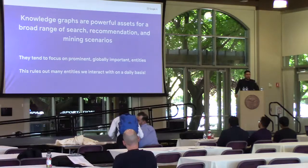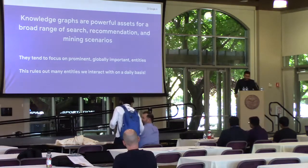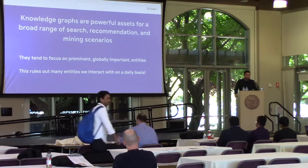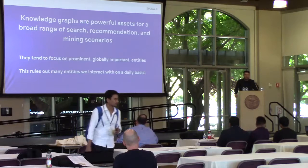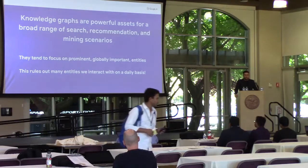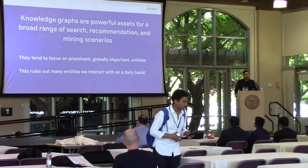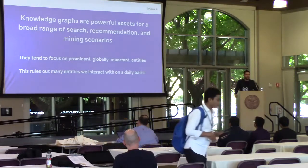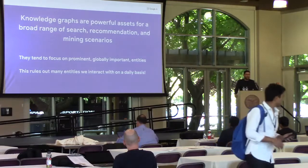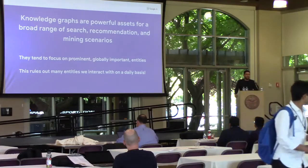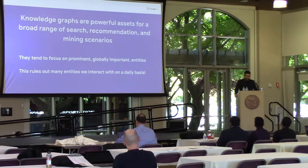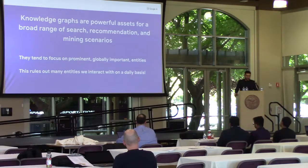Knowledge graphs have been used in a broad range of scenarios. One property of that is that they tend to focus on prominent entities that are in some way considered globally important. And one problem with that is that it rules out a lot of entities that we interact with on a daily basis.